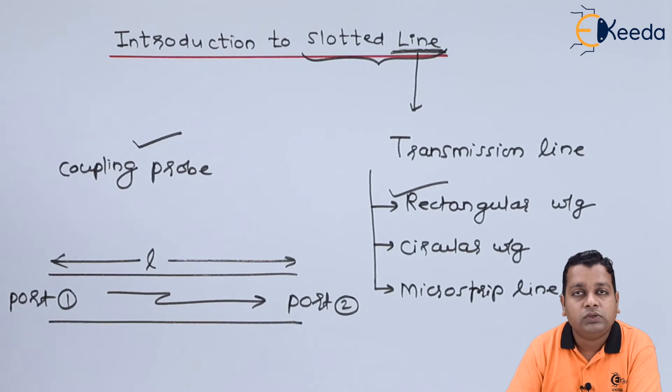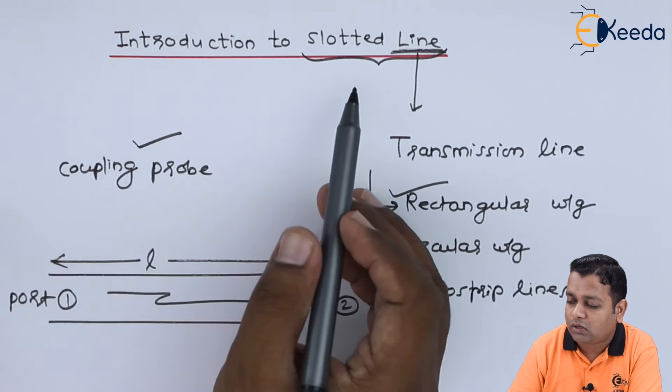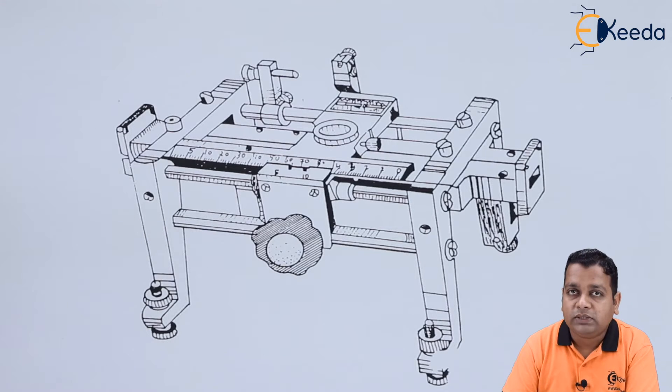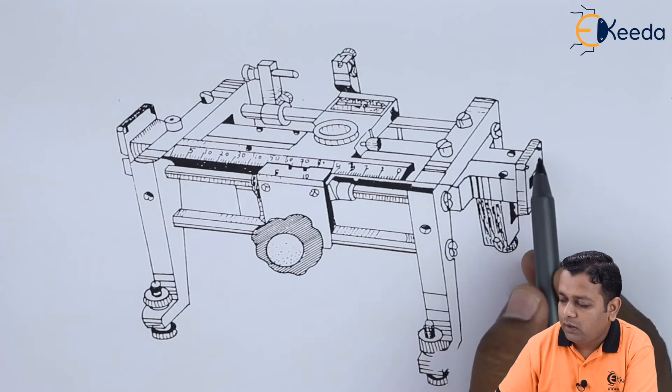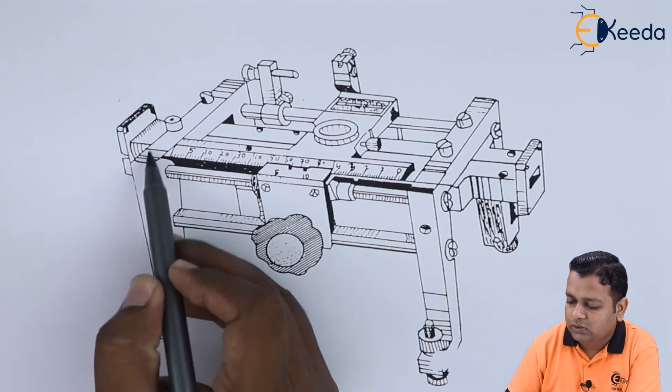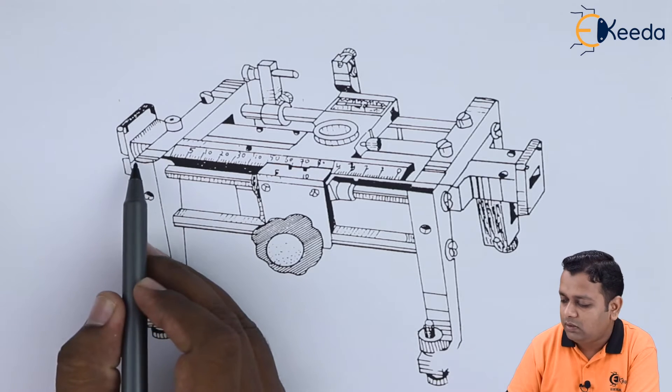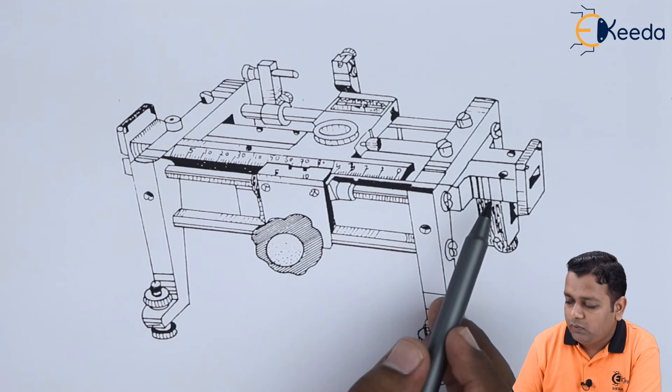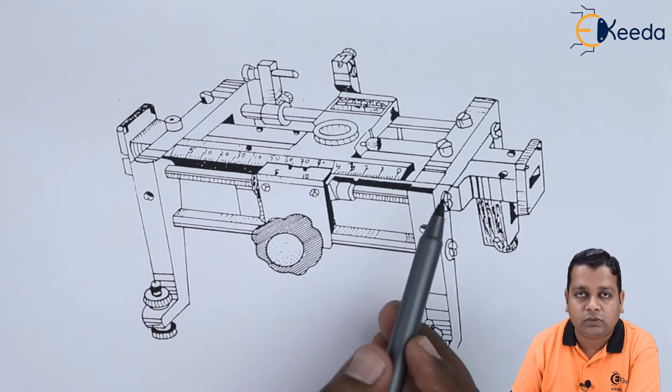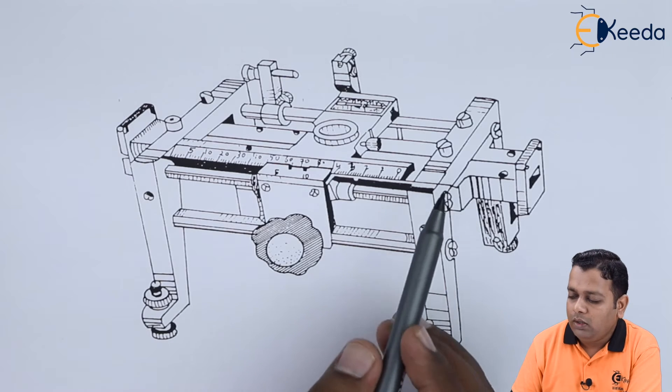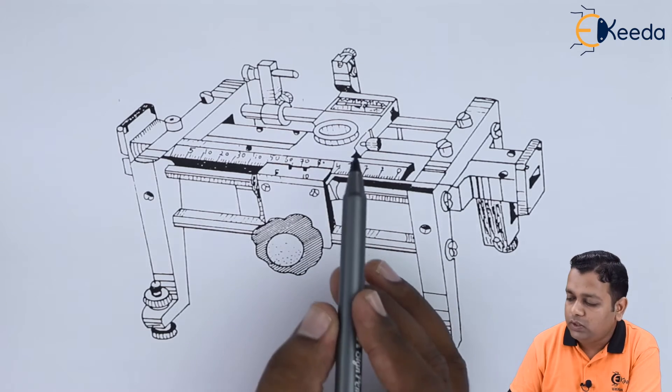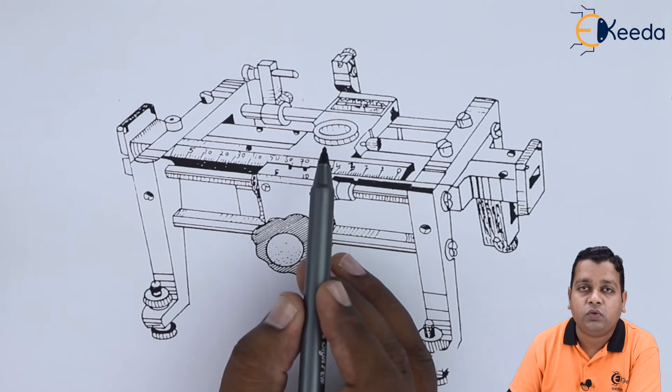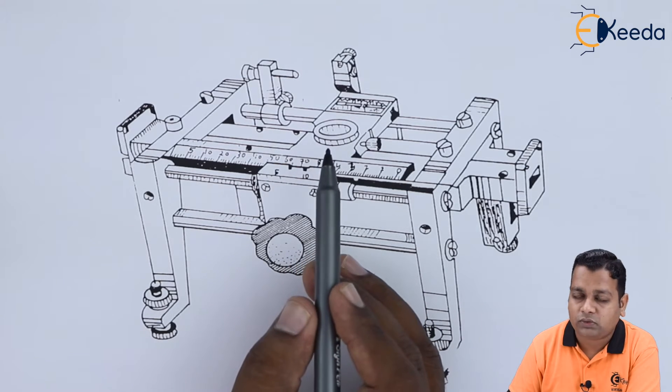Let us visualize how exactly the slotted line looks like. This is the simple schematic of the very popular component in the microwave test bench called slotted line. You can see here, right from this opening to this opening onto the back side, this is the rectangular waveguide. The length of the rectangular waveguide you can physically also measure, and whatever this assembly is, there is a provision to connect the tunable detector, which is our next topic to address, or a coupling probe in general.